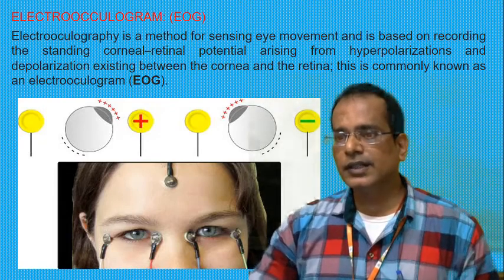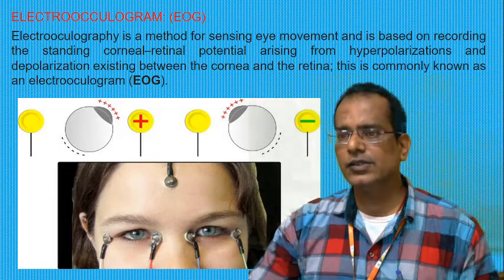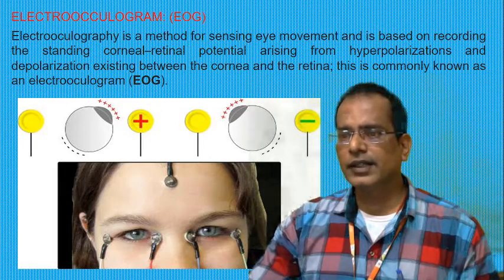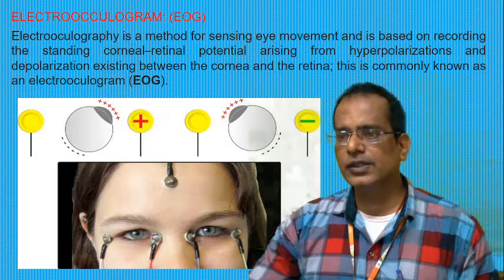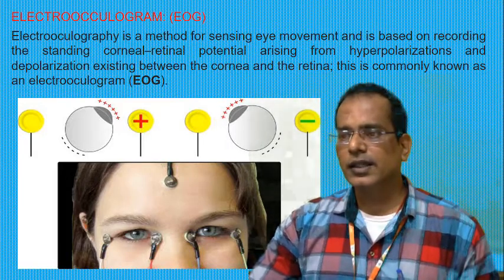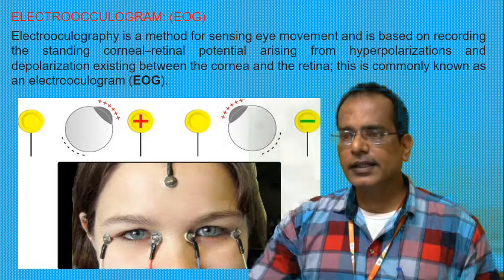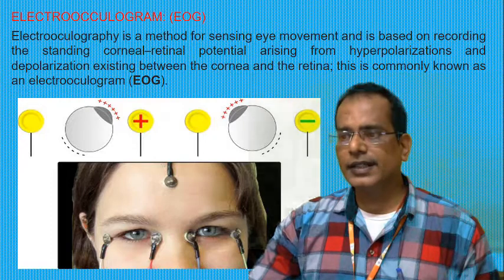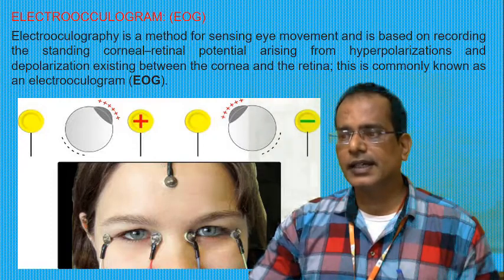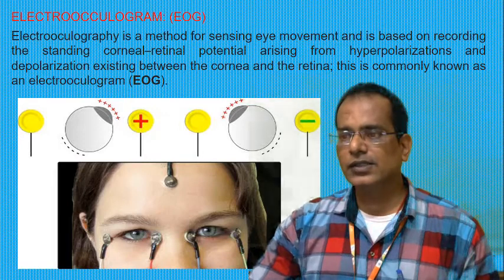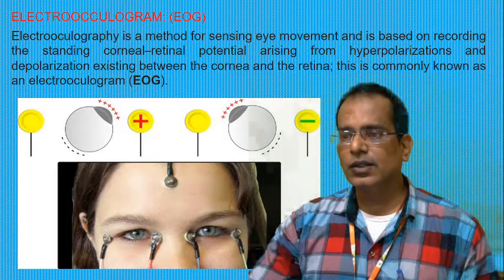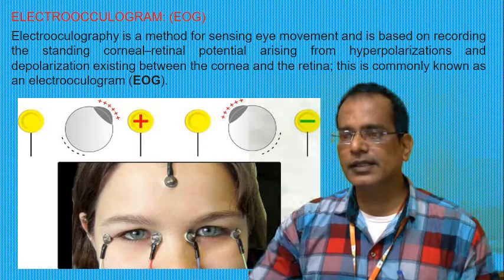Regarding the uses of EOG: for detection, four to five electrodes are used to acquire the EOG signal. These electrodes are also called transducers because they convert the movement of the eye into an electrical signal — that is the purpose of the electrode. Two pairs of electrodes are placed near the eye skin.